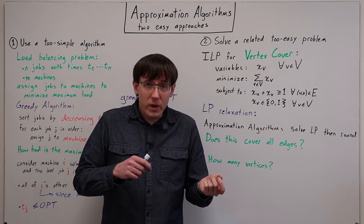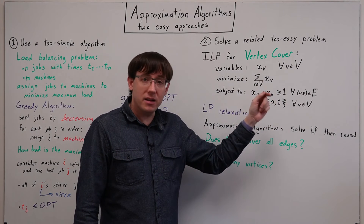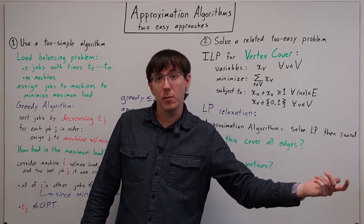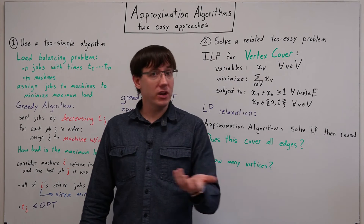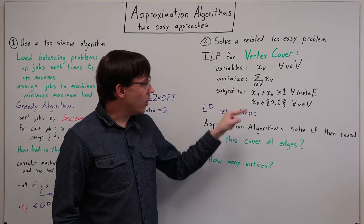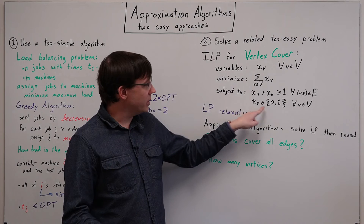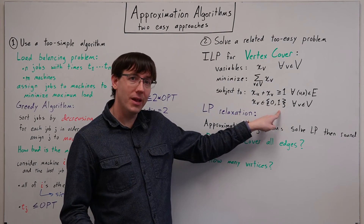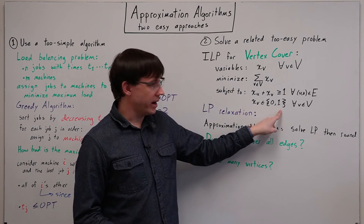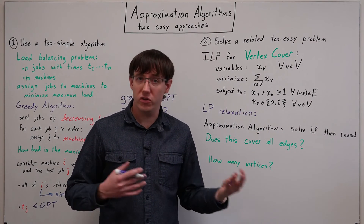So instead, we can avoid solving the integer program, and instead solve a relaxation of the integer program that turns it into a closely related linear program. Our integer constraints say that every variable has to be either 0 or 1. And so if we turn this into a linear program, we'll replace these constraints with each variable being between 0 and 1.